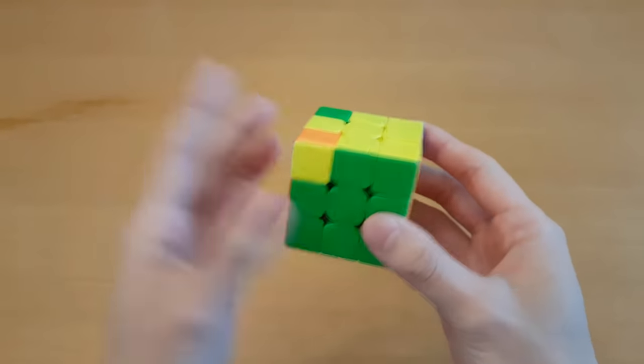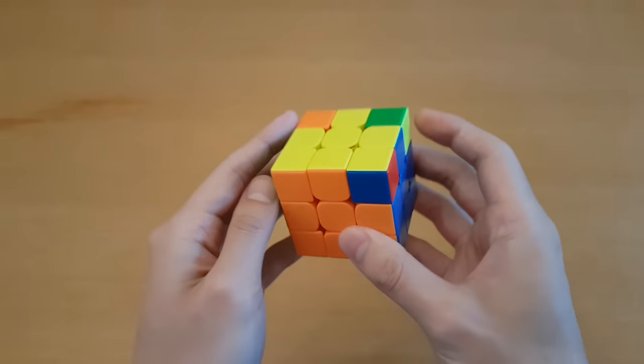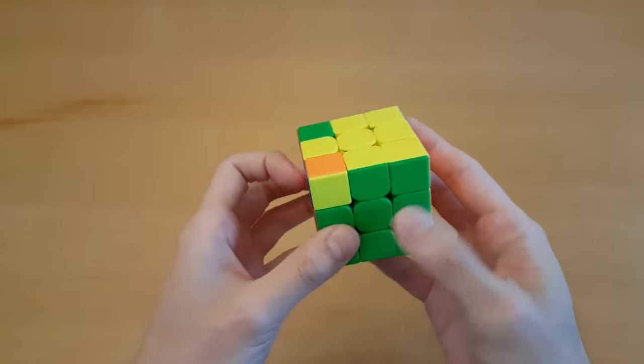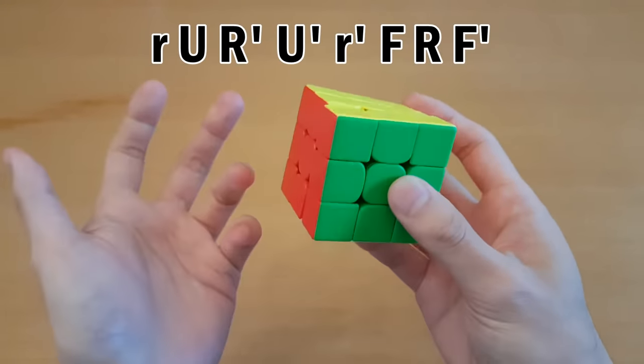The commutator idea is used in plenty of algorithms, you may not have realized that this one is simply a three-corner swap because you're usually thinking about making yellow on top, but it is a commutator, it's just done like this, so that the finger tricks are better.